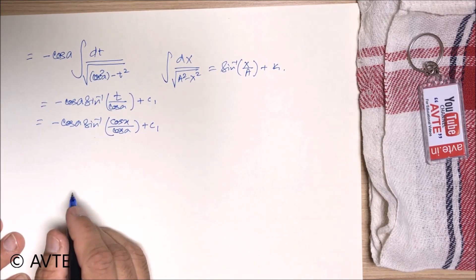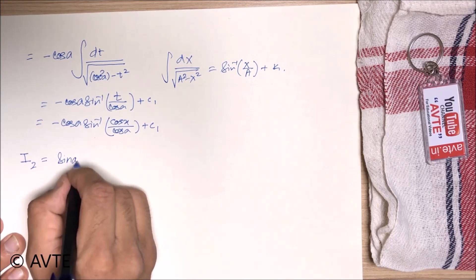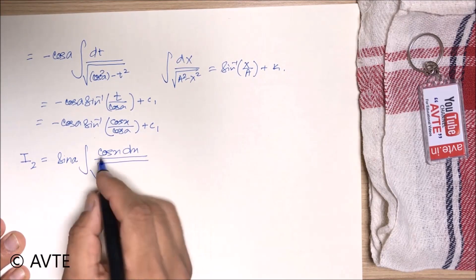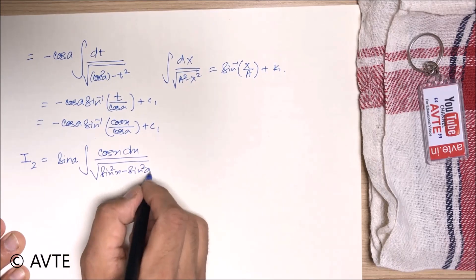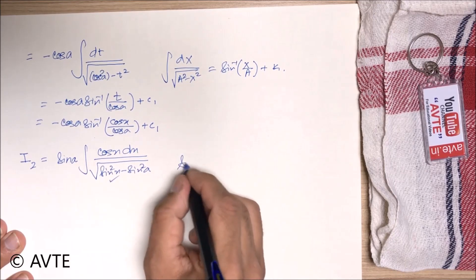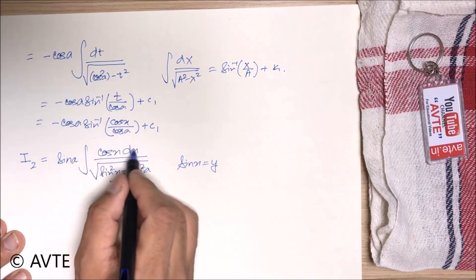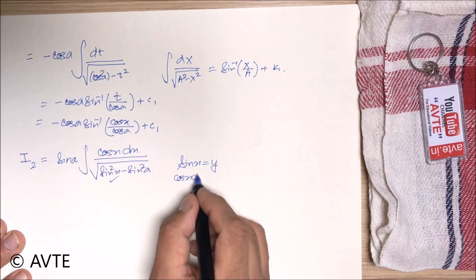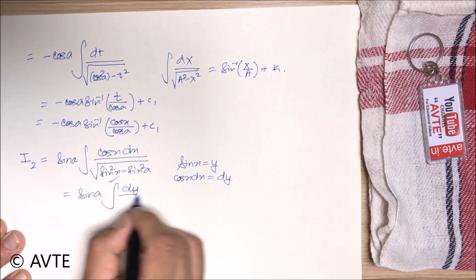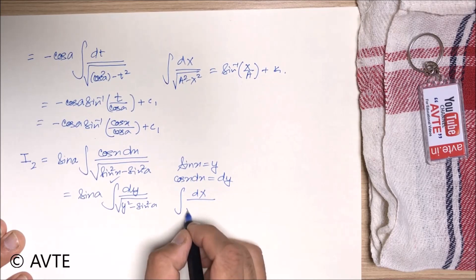Now we come to the second part. I am writing i2. This part is simple because you can simply put sin x is equal to y. We have already taken t so we are using y. And directly you can capture cos x dx as dy. So we are changing the respect.